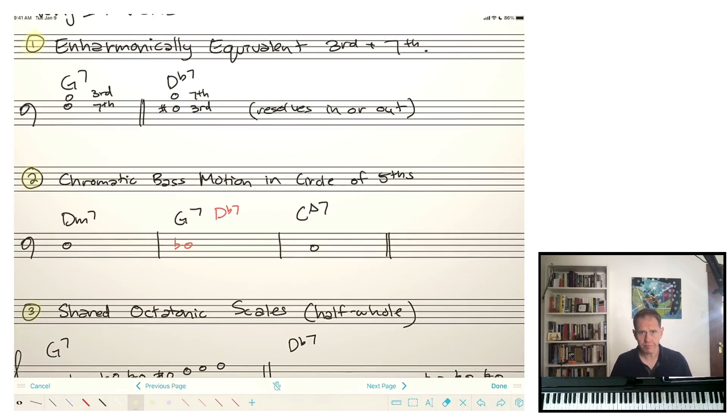The first and the biggest reason is that these chords have enharmonically equivalent thirds and sevenths. So for a G7, for instance, the F natural would be the 7, and then the B natural is the 3rd. And for its tritone sub, which is D-flat 7 or C-sharp 7. In fact, I spelled everything as C-sharp 7, stupidly. Bad theory professor. Bad. C-sharp 7.